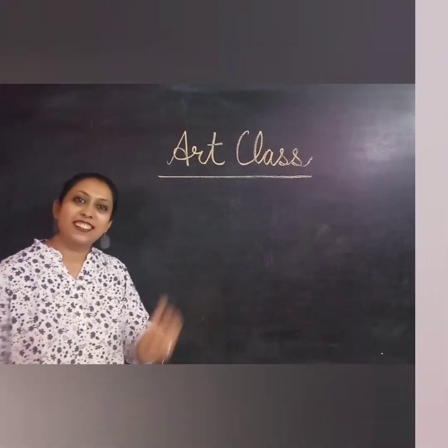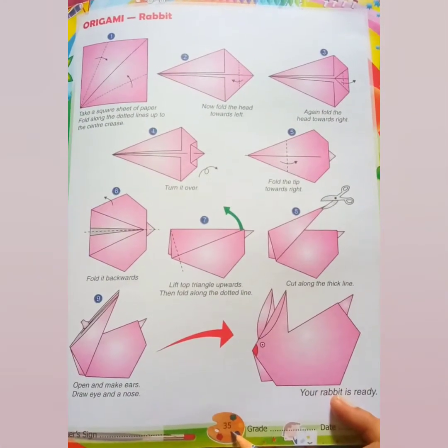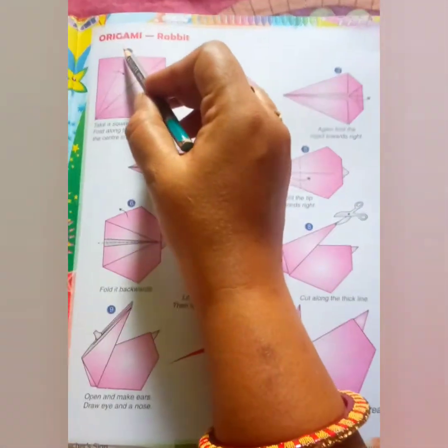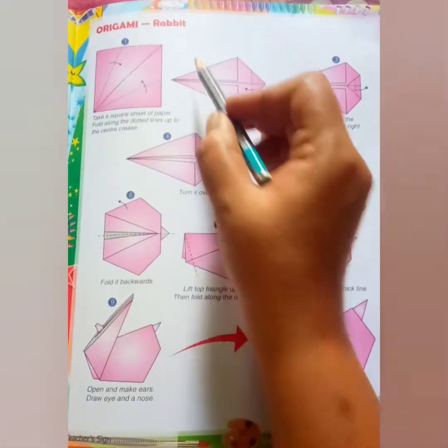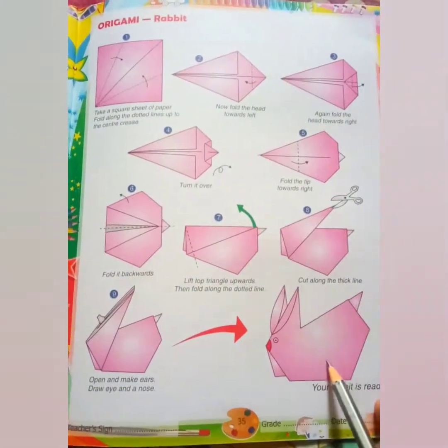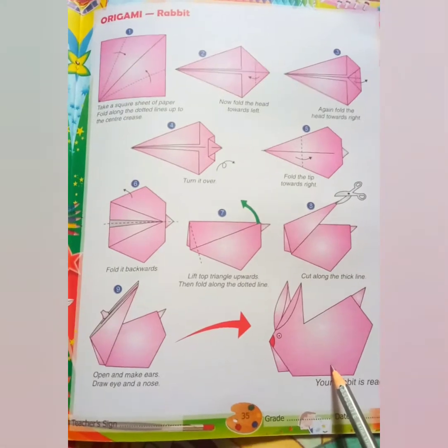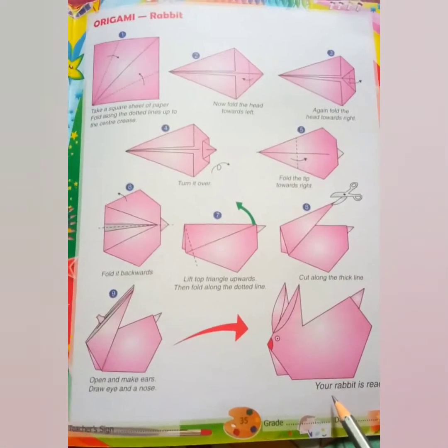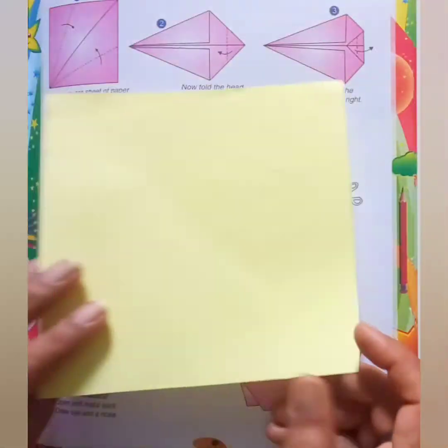We will be doing page number 35. Write down date and classwork origami rabbit. By using these steps we will be making this rabbit with origami sheet. You can take any color origami sheet. Let's start.